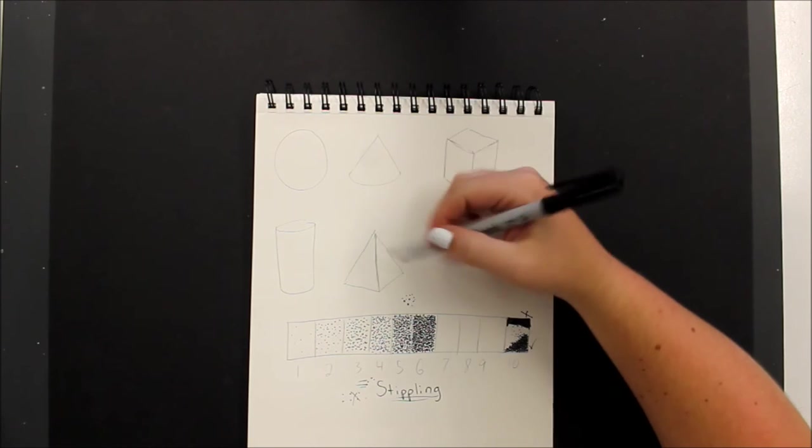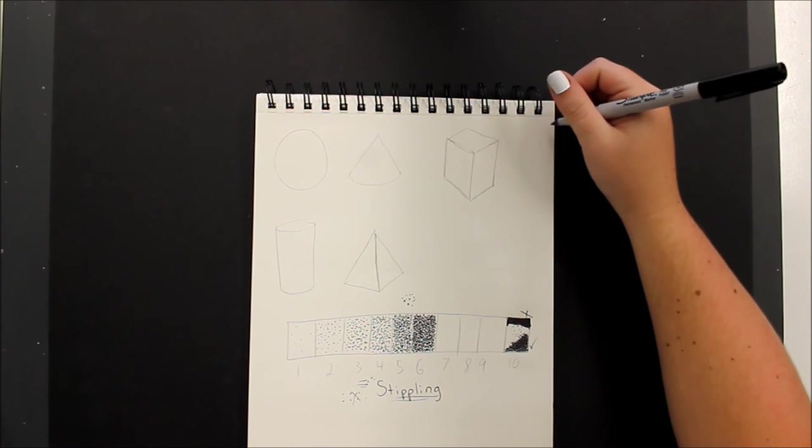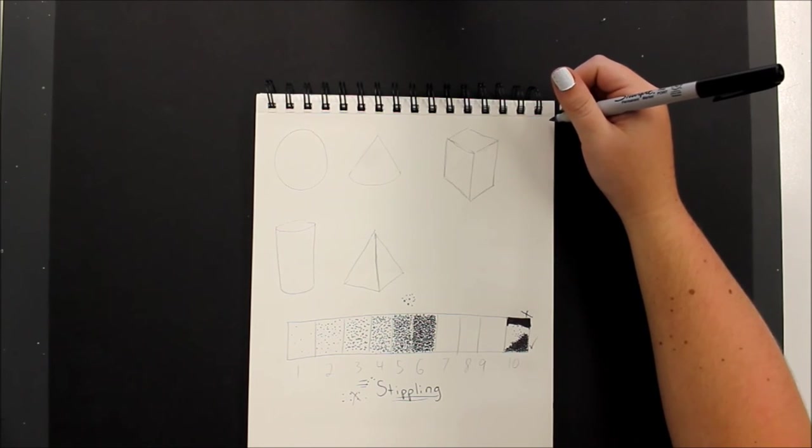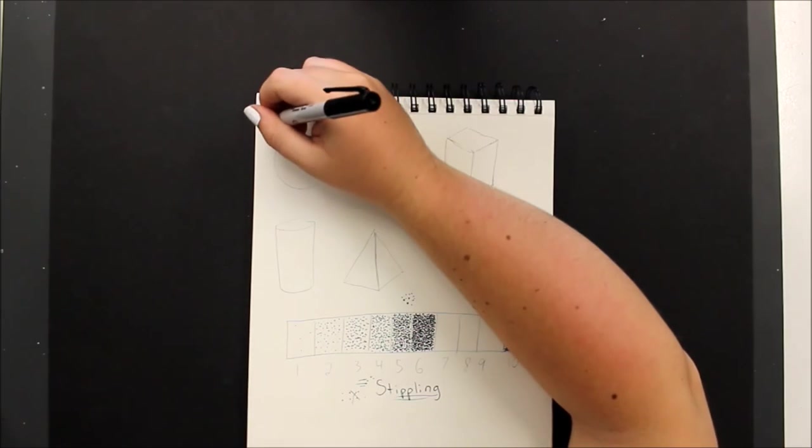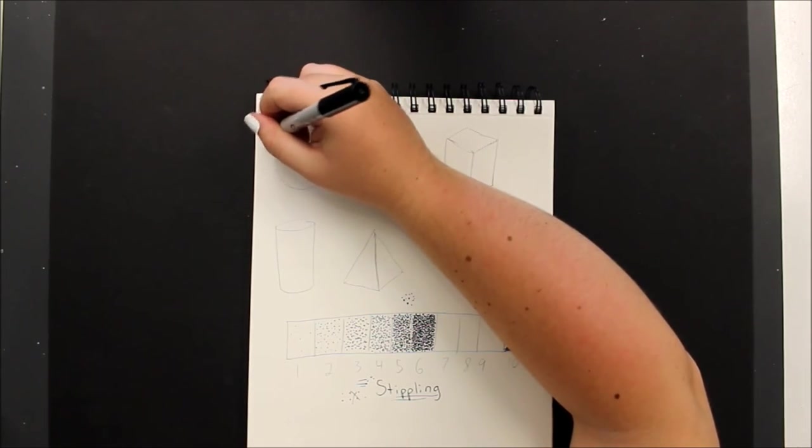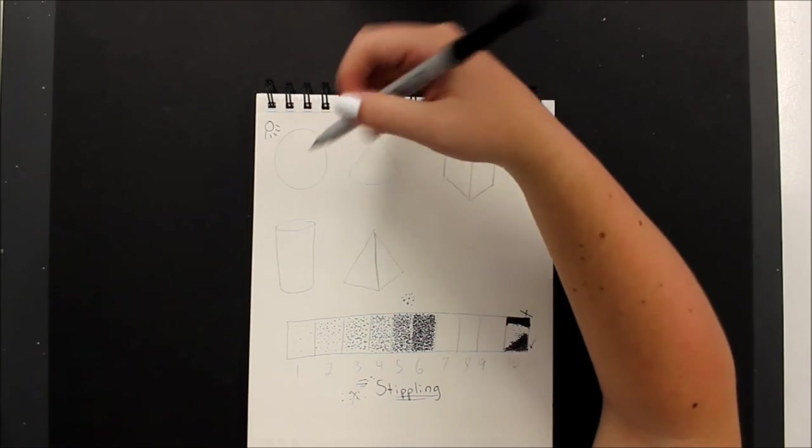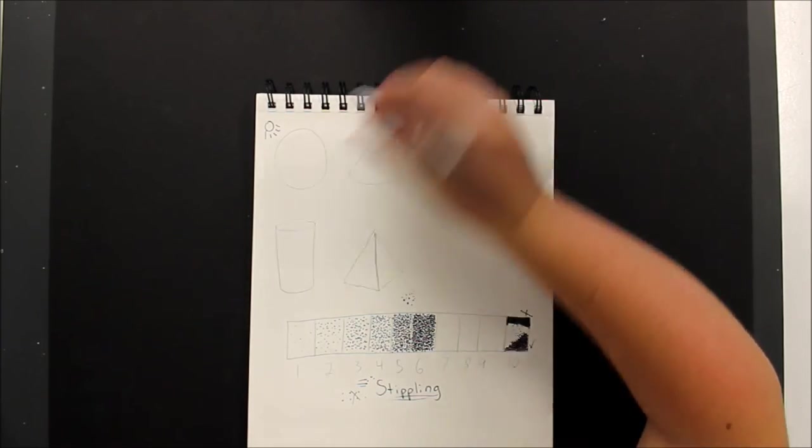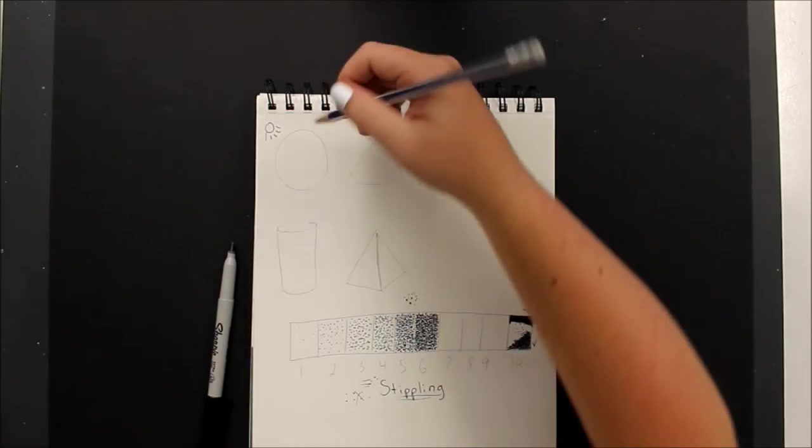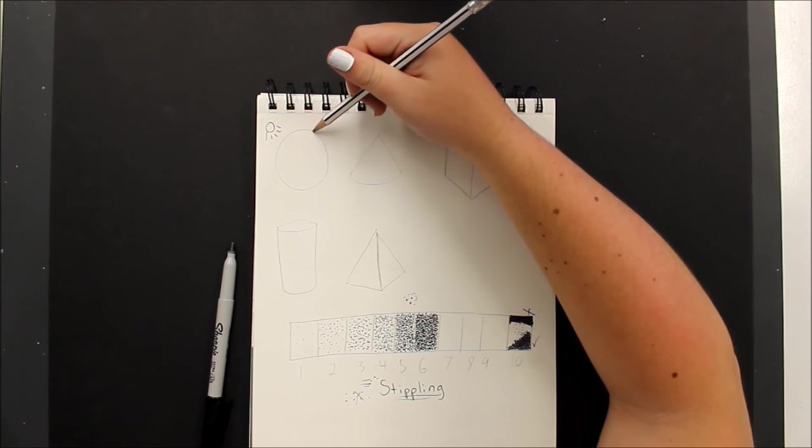Now filling in our forms. As always, choose your light source and then fill in from there. I'm going to choose my light source as being up here. You can always make your little light source indicator for yourself. I'm going to go ahead and use my pencil to show where those shadows are going to fall.